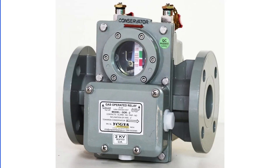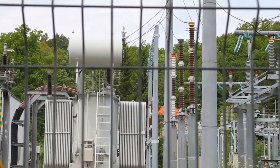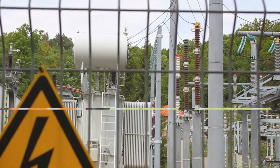Lastly, we have the Buchholz relay, a gas-actuated device which detects faults by monitoring gas accumulation in the transformer. This relay serves as an alarm or trip element, depending on the volume of gas or the speed of oil loss. Mechanical protections are essential to prevent potential physical damage to the transformer.